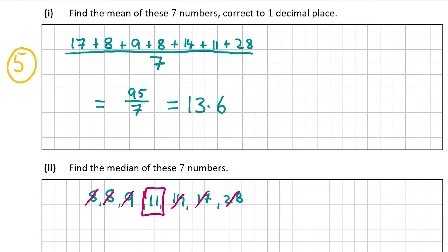Therefore, the median of those 7 numbers is 11. That's our answer for part 2, which is worth 5 marks. Just to be careful, you must have the data set in order from lowest to highest.